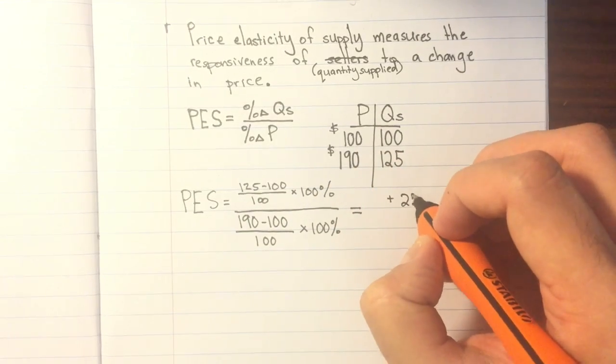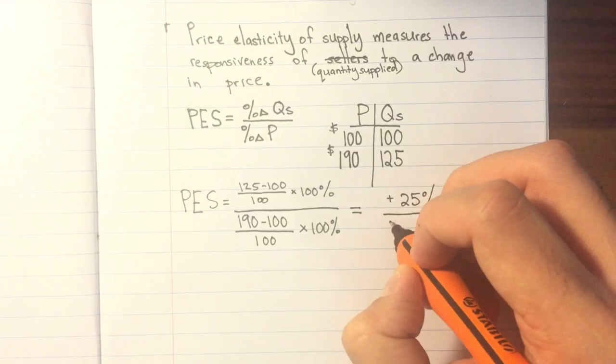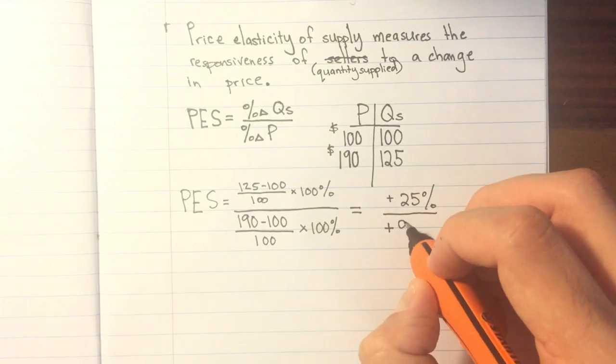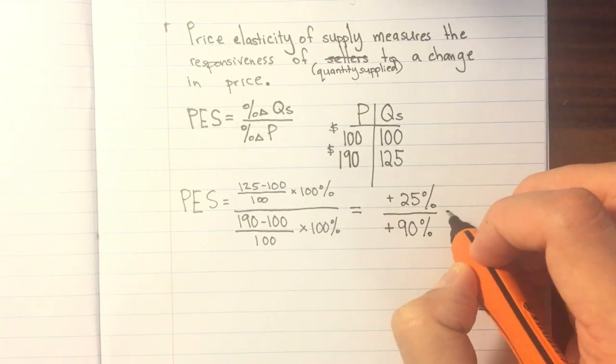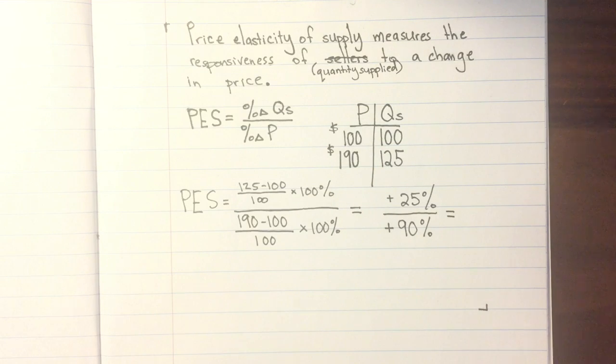Working this out all the way, we should get positive 25% divided by positive 90%. You can imagine that this value is going to be less than 1, and when we calculate it through, we should get something around positive 0.263.